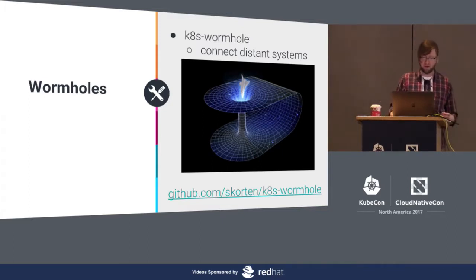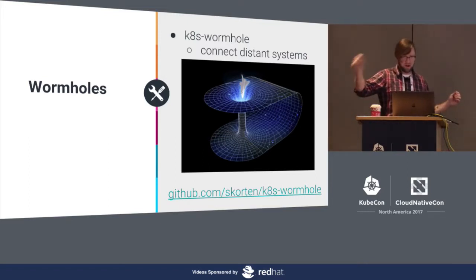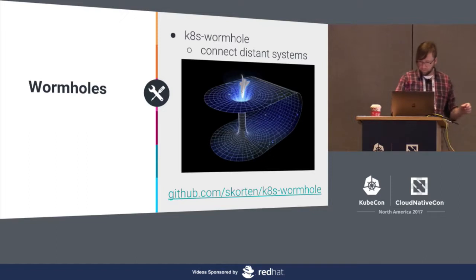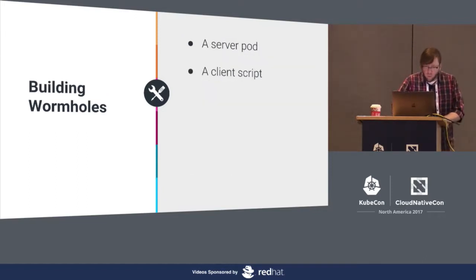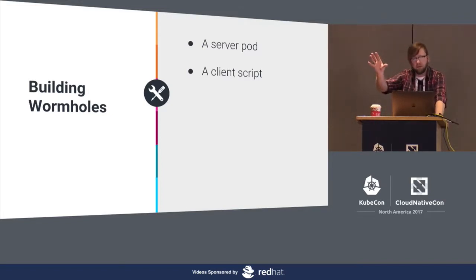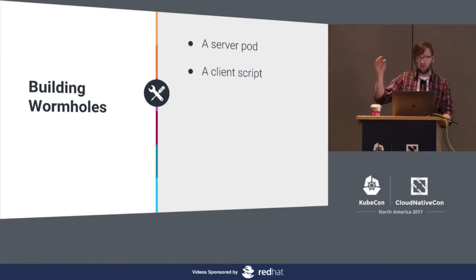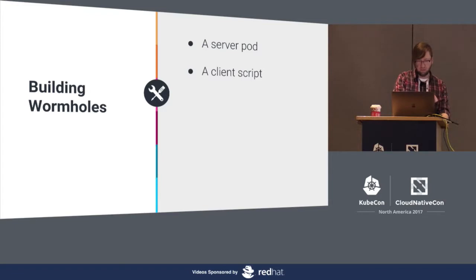I'm a bit of a sci-fi nerd, so I was thinking Farscape, Stargate — where you have this gateway going back and forth between your cloud cluster and your local cluster. I decided to create a simple pod up in the same Kubernetes cluster as where I'd be running Spinnaker, and have it listen for a connection from your local machine running Minikube.